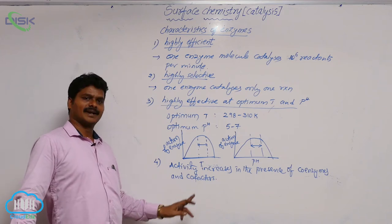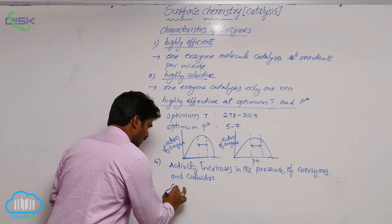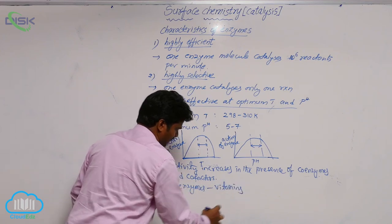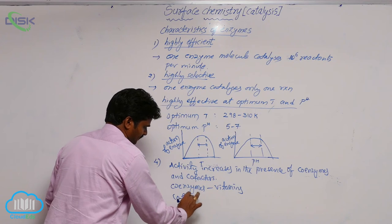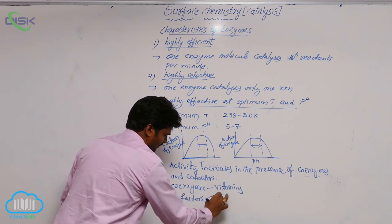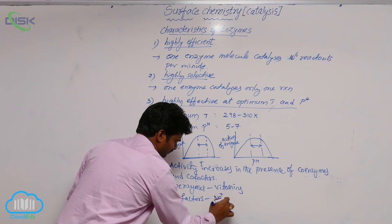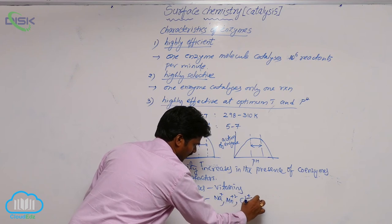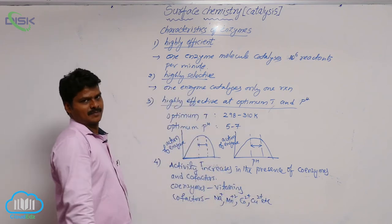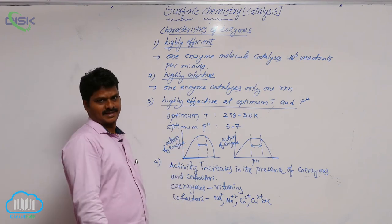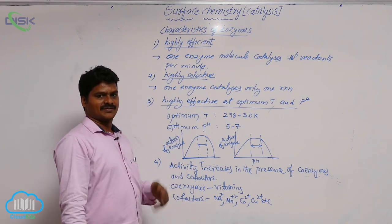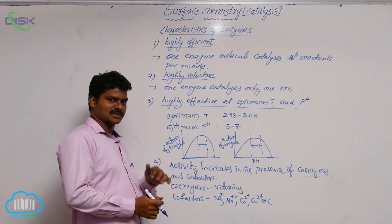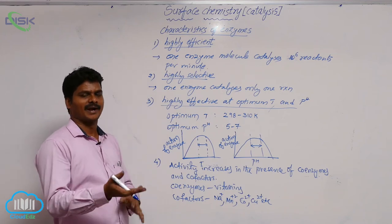Generally used coenzymes are vitamins. Generally used cofactors are metal ions such as sodium, manganese, cobalt²⁺, and copper²⁺. They act as promoters for enzymes. For example, the enzyme amylase is activated by sodium chloride — so if asked which substance activates amylase, the answer is sodium chloride or sodium ion.